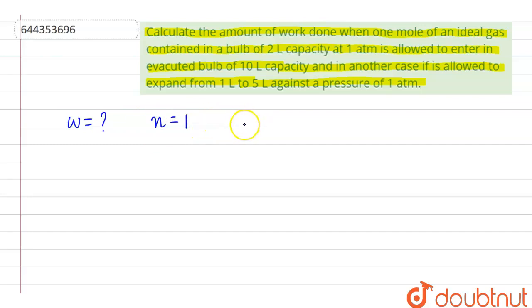Which is contained in a bulb of 2 liter. So also it is given that in other case, the gas is allowed to evacuate in another bulb that is of 10 liter capacity, but it expands to the volume of 1 to 5 liter. So V₁ is given as 1 liter and V₂ is given as 5 liters. Also pressure is given as 1 atmosphere.